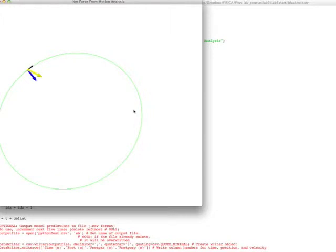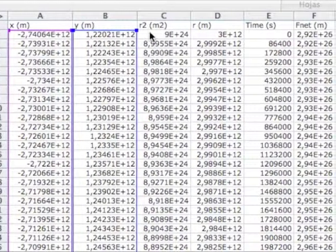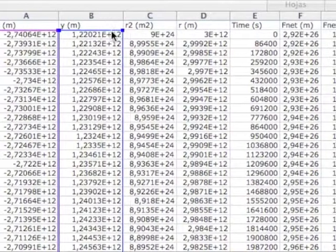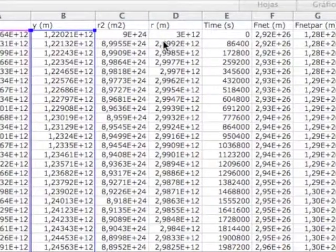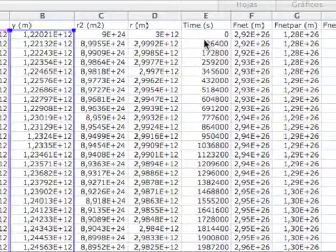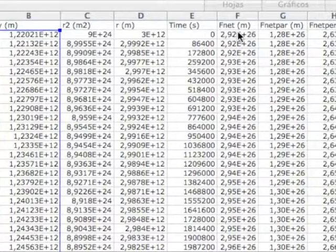What if our black hole is more massive with the same ellipse? The star should be faster.